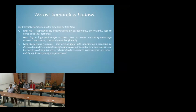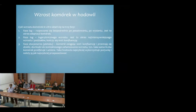Cykl wzrostu komórek w hodowli in vitro można podzielić na trzy fazy: faza lag, faza log oraz faza stacjonarna, inaczej faza plateau. Faza lag rozpoczyna się bezpośrednio po pasażowaniu komórek i jest to okres adaptacji komórek do nowych warunków. Faza log to faza intensywnego, logarytmicznego wzrostu, która kończy się stuprocentową konfluencją komórek.